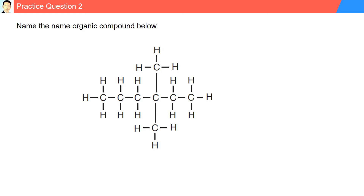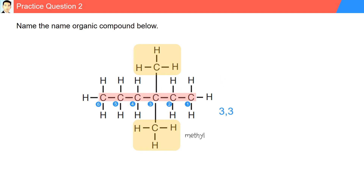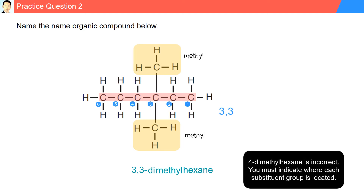Practice question two. Name the organic compound. First step is to identify the longest parent chain — here we have six carbons. We can name them from left to right or from right to left. From left to right, the branch is located on carbon four; from right to left, it's located at carbon three. So we select carbon three. There are two branches located on the third carbon — one is methyl and another is methyl. The longest chain is hexane. The substituents are both methyl, so we use dimethyl, located at carbon three. Our answer is 3,3-dimethylhexane. Note that 4,4-dimethylhexane is incorrect since you need to indicate where each substituent group is located.